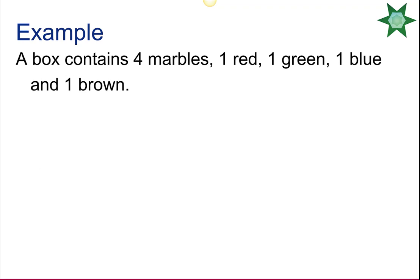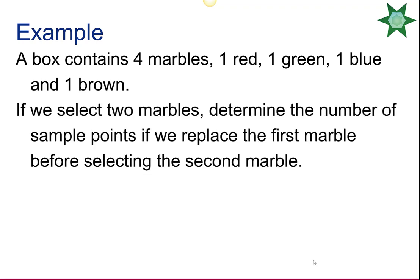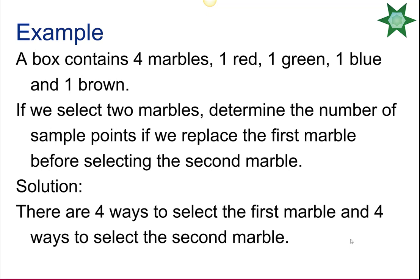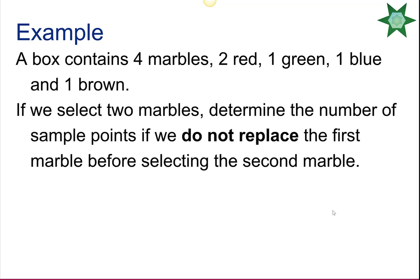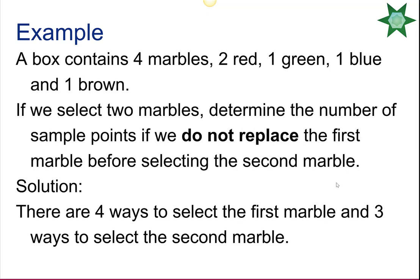A box has four marbles: red, green, blue, and brown. If we select two marbles with replacement, there are 4 × 4 = 16 sample points. Without replacement, after picking the first marble we have only 3 left, giving 4 × 3 = 12 sample points.